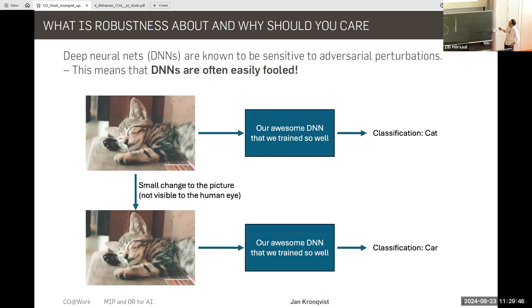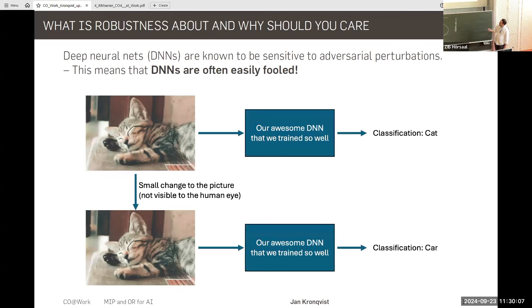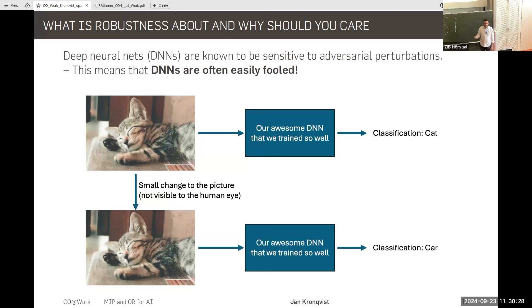Let's look at what I mean by fooling them. Here we have a neural network trained with all the bells and whistles to classify cats. We feed it a picture of a cat — it tells us with very high confidence it's a cat. But if someone makes a very small perturbation to the picture — you can't really see a difference, but all the pixels are mixed a little bit — and you feed this into the same neural network, it will be classified as a car.